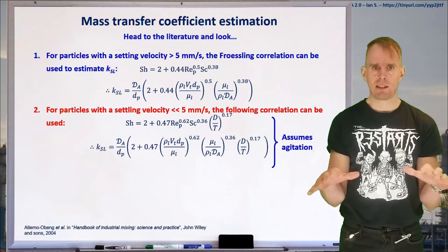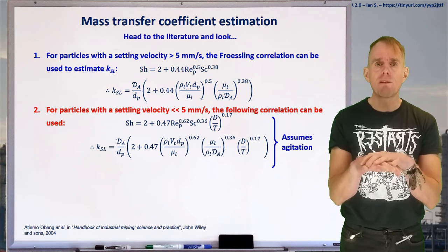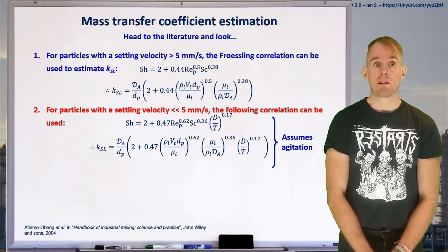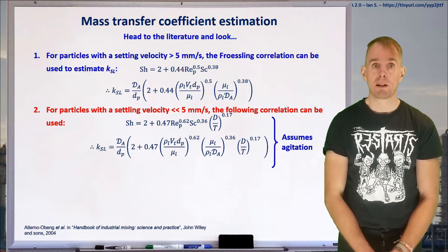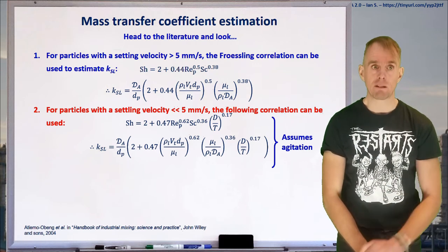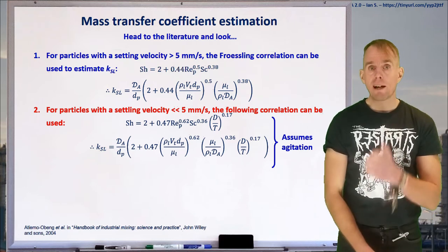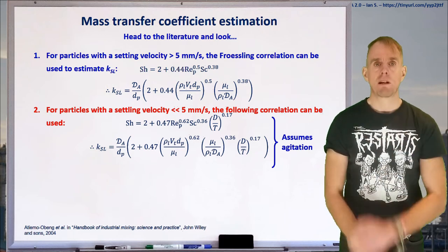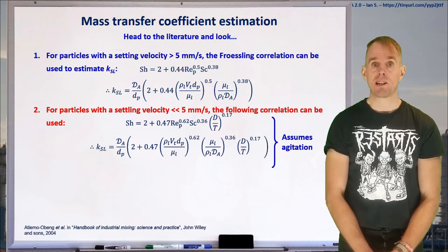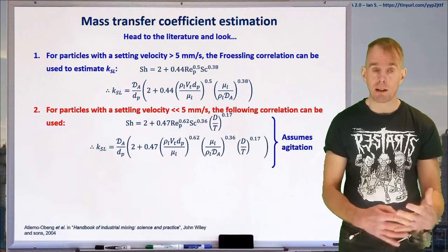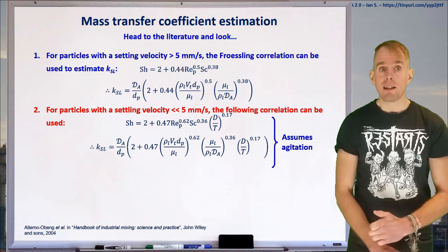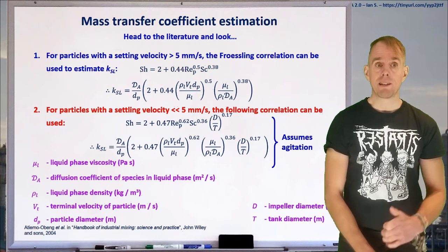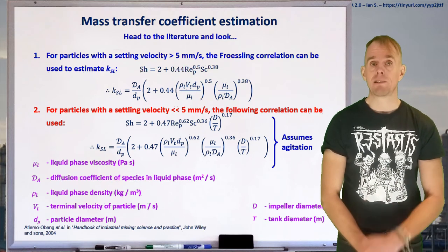If you've got very, very fine particulates that settle very, very, very slowly, then you'll need a different correlation to the Freustlin correlation. And here on the board, I've put a correlation for particles that, indeed, settle very, very slowly. And we'll see that it's got an extra non-dimensional term in it, D over T. That's because some correlations assume that you have agitation happening and are only valid under those circumstances. D and T in this particular example are the diameters of the impeller and the diameter of the tank.